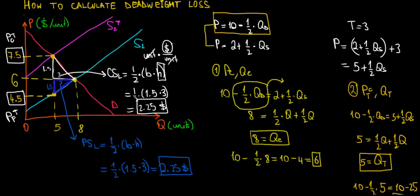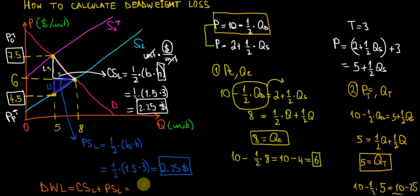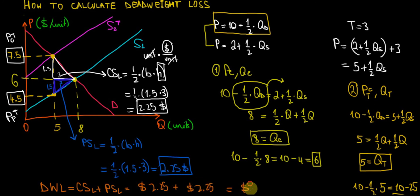To sum up, the deadweight loss equals consumer surplus loss plus producer surplus loss: $2.25 plus $2.25 equals $4.50 of deadweight loss. I hope this all makes sense. I appreciate you all watching — if you liked the video, please make sure to subscribe.